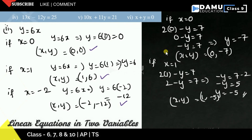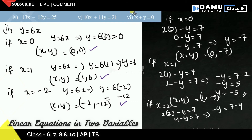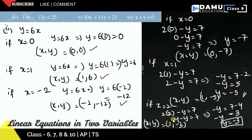For the third solution of 2x - y = 7, if x = 2, then 2(2) - y = 7, so 4 - y = 7, giving -y = 3, so y = -3. The solution is (2, -3).